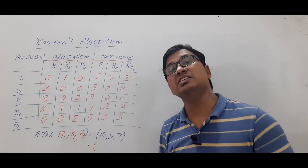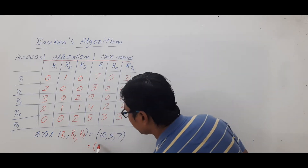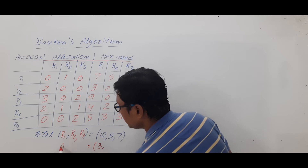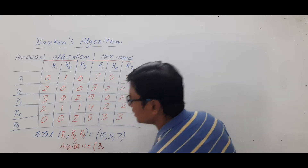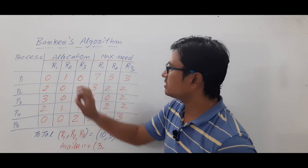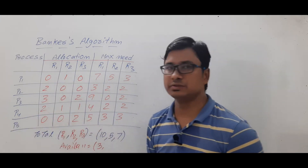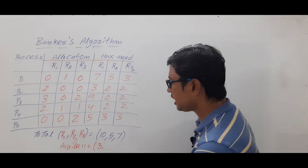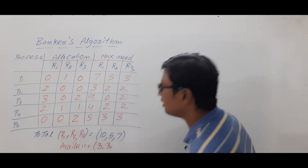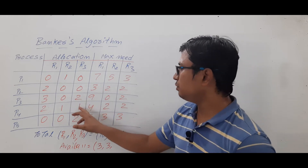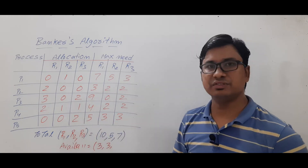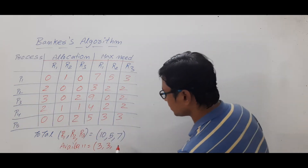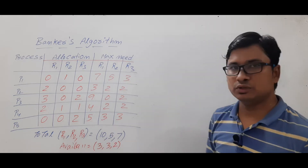So the availability of R1 is three instances. For R2, one instance was allocated to P1 and one to P4, so out of five, two are allocated and three are currently available. For R3, two plus one plus two equals five instances allocated to P3, P4, and P5, so out of seven, five are allocated and two are available. Current availability: R1=3, R2=3, R3=2.